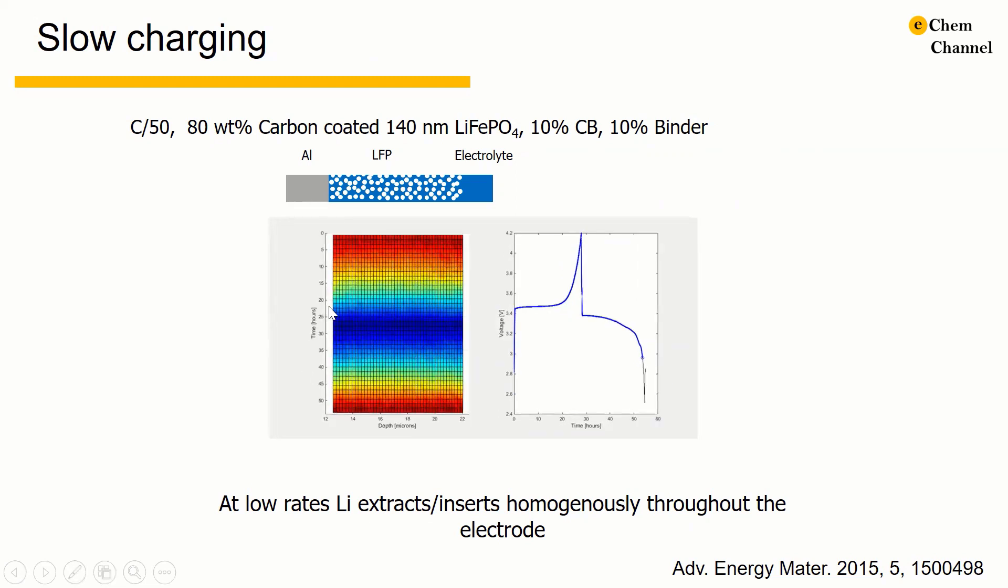Then, the lithium ion concentration is plotted as a function of time and depth. Red means high lithium concentration and blue means low concentration. Over the electrode depth, the change of lithium ion concentration is even or almost depth independent. It means that all grains charge and discharge at the same time.